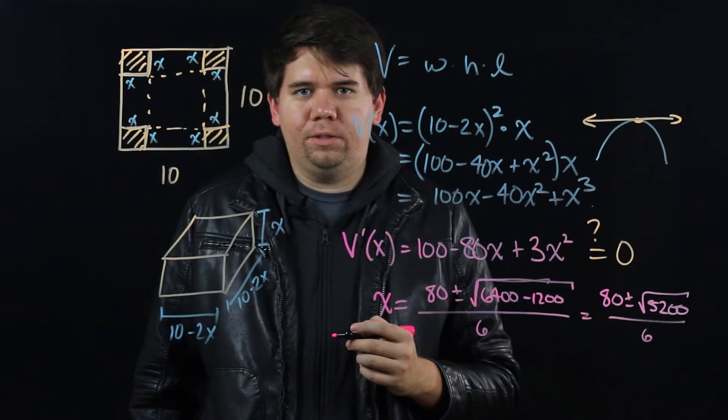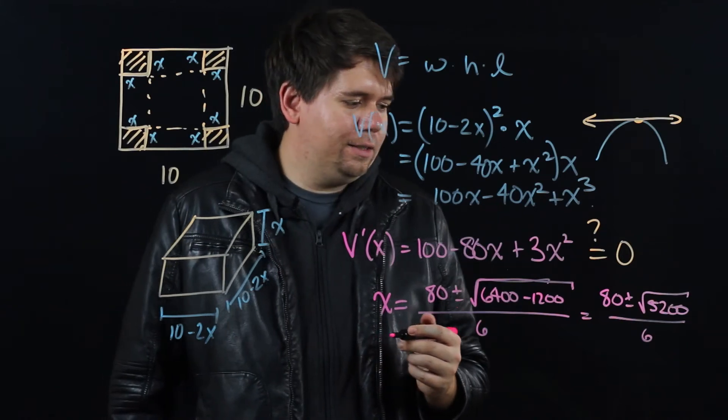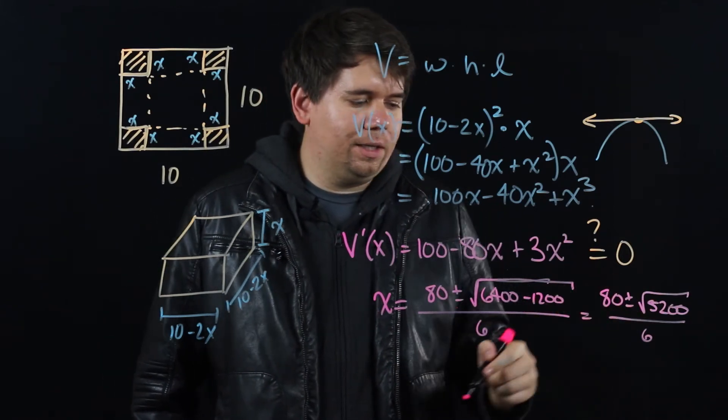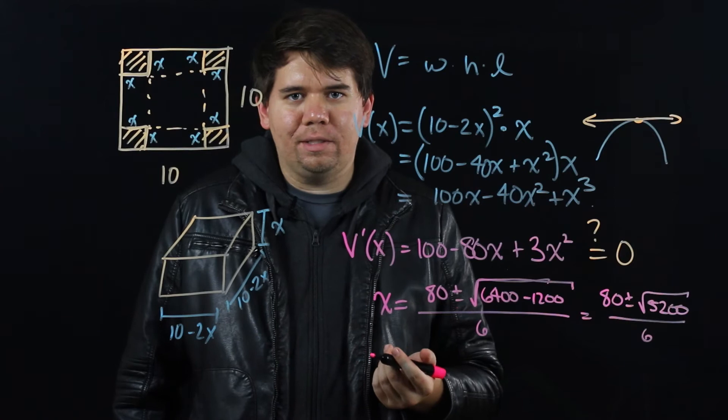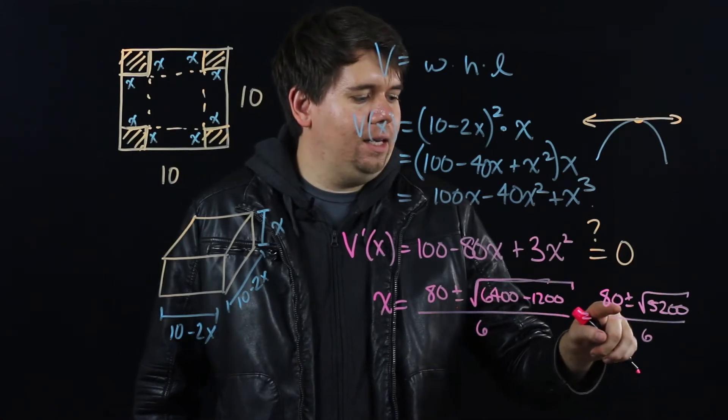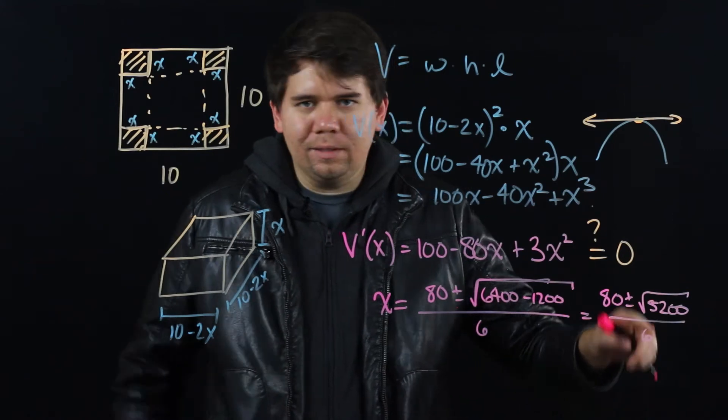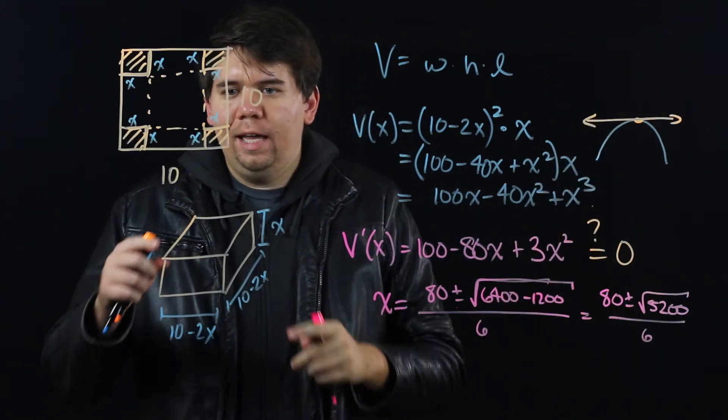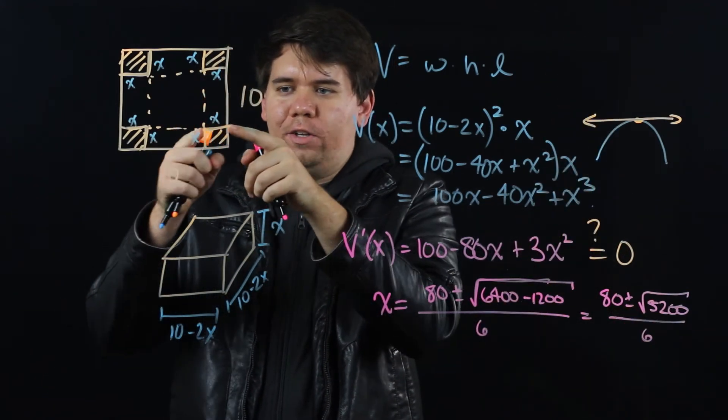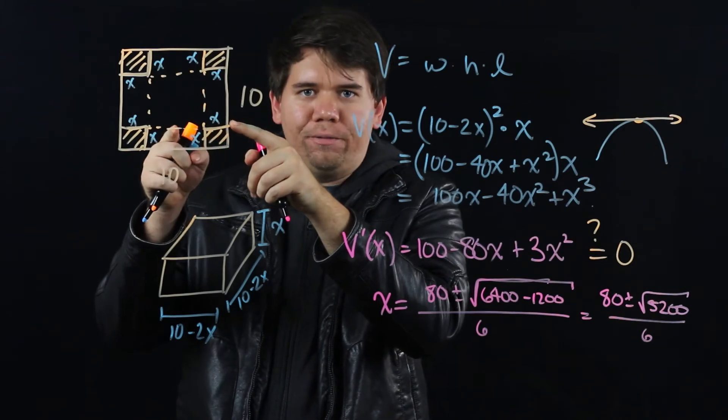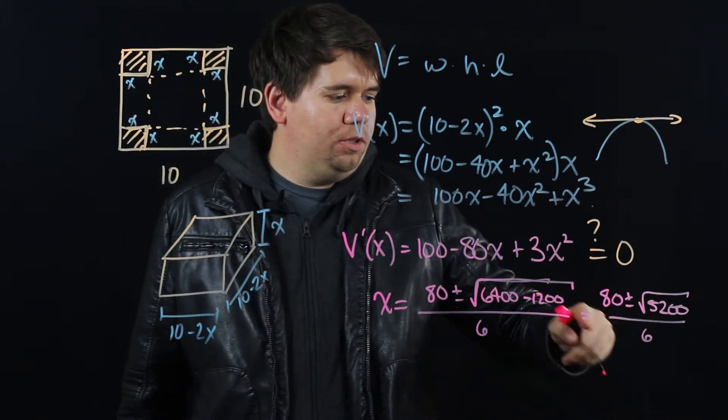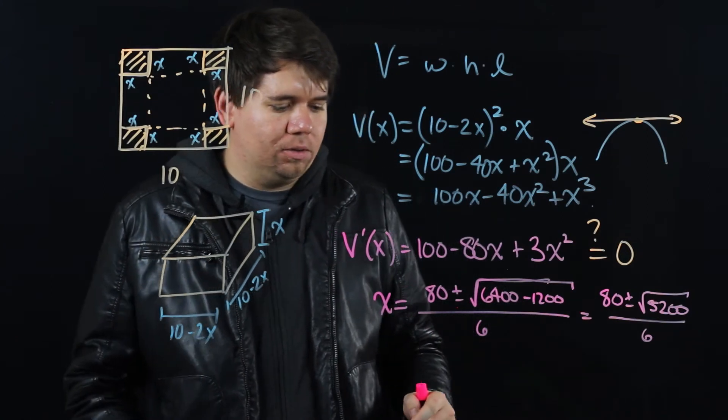But a couple of things to notice. One is you have two possible solutions here. But one of them is clearly ridiculous. If you do 80 plus the square root of 5200 divided by 6, it's still a pretty big number. And there's no way you can have an x that big. Your x can be at most 5, right? It can be at most half the distance.